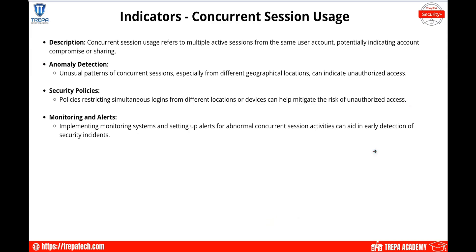Another indicator is concurrent session usage — multiple active sessions from the same user account, potentially indicating account compromise or sharing. We can build anomaly-based detection using heuristics or behavior patterns like time-based usage. If we have concurrent sessions on the west coast, east coast, and Europe from the same user account at the same time, that's a strong indicator the account's been compromised. We can set security policies and monitoring alerts with a zero trust framework, enforcing a second or even third factor for suspicious logins.